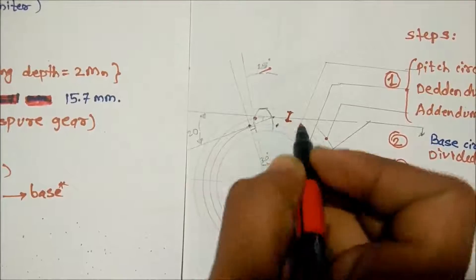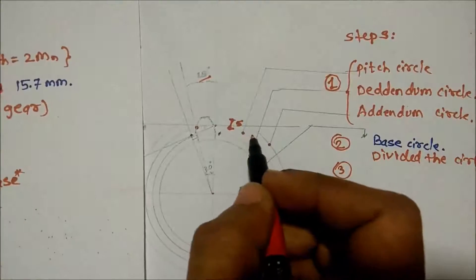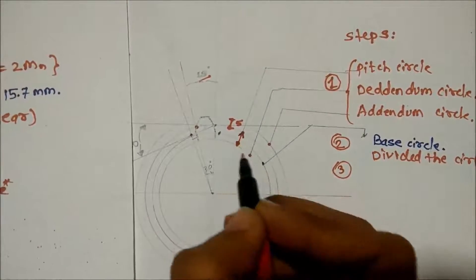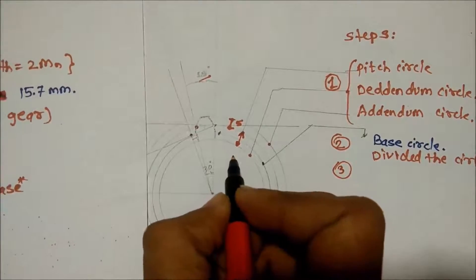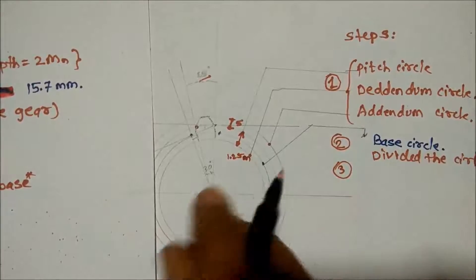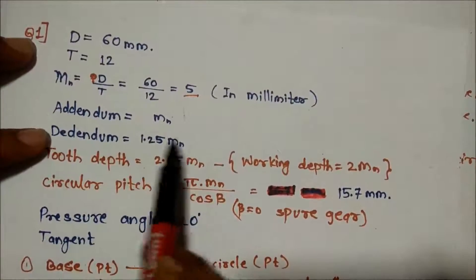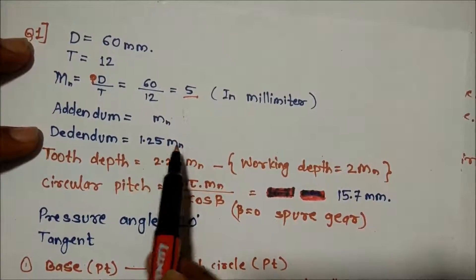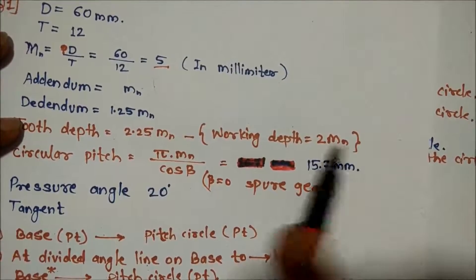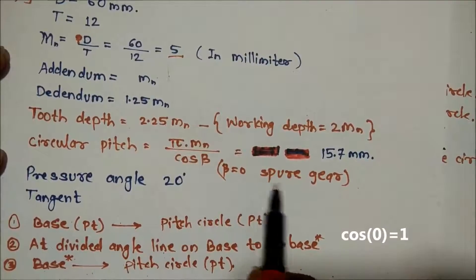The addendum equals the module, which is 5. The dedendum from the pitch circle to the dedendum circle equals 1.25 times the module, giving 1.25 × 5. The pressure angle is 20 degrees. Addendum = 1 × module; dedendum = 1.25 × module; whole depth = 2.25 × module; working depth = 2 × module; circular pitch = π × module divided by cos β. For a spur gear, cos β = 1.